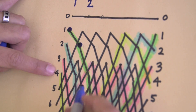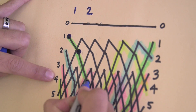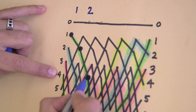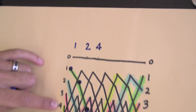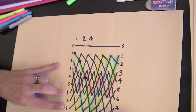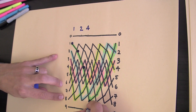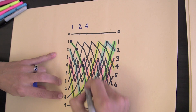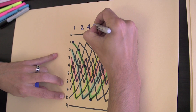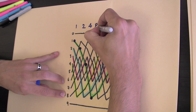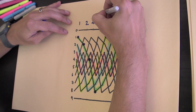Now let's follow it over here. You see now it's in position four. I follow it one more step, it comes down here, and you see now it's in position eight. And I guess you start seeing a pattern — each time, the position is just doubling.